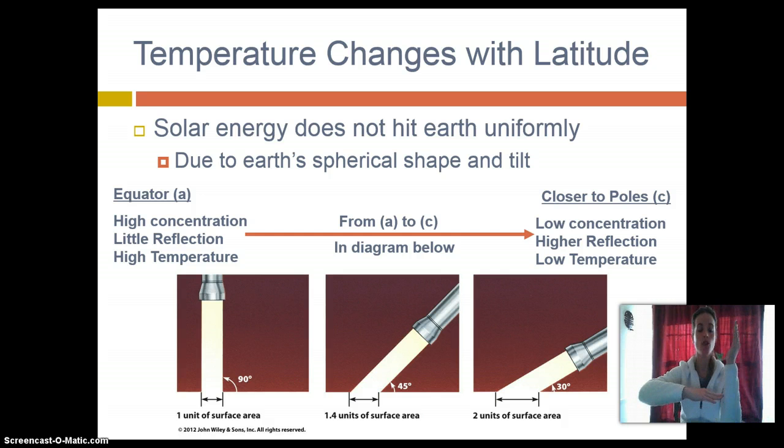Now, as you progress from the equator to the poles, that angle decreases. And essentially, that solar heat gets spread out over a greater surface area. Now I'm going to demonstrate this with my flashlight and this notepad.